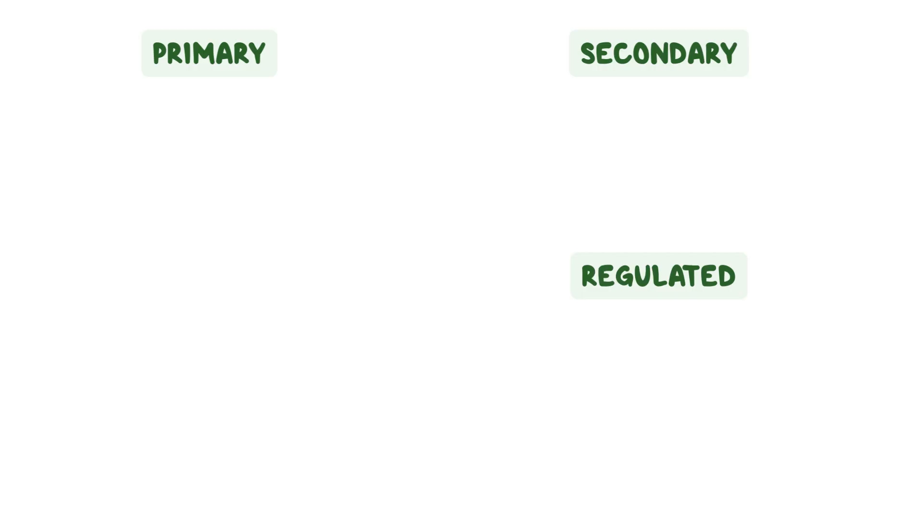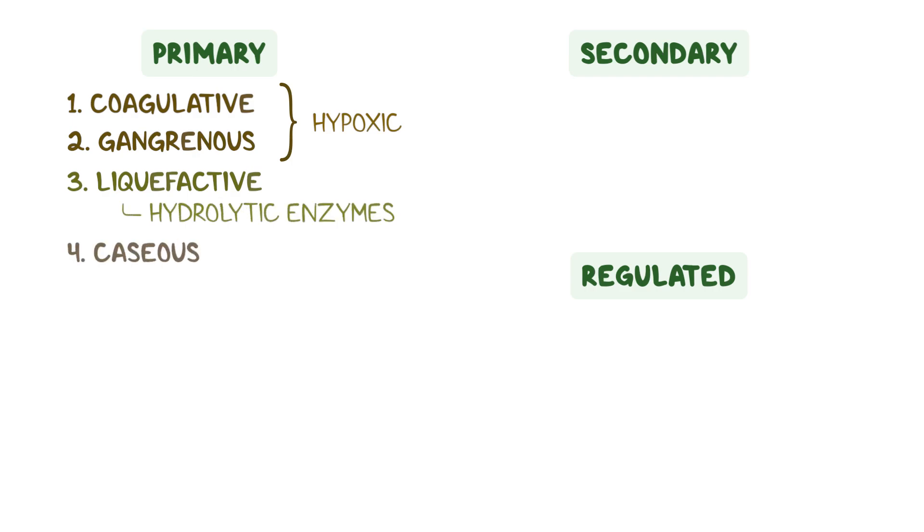Primary necrosis includes six types of necrosis. Coagulative and gangrenous necrosis, which happen to hypoxic tissues, liquefactive necrosis, which happens because of hydrolytic enzymes, caseous necrosis, like in tuberculosis, fat necrosis, which happens when fatty acids spill outside adipose cells, like during trauma, and finally, fibrinoid necrosis.